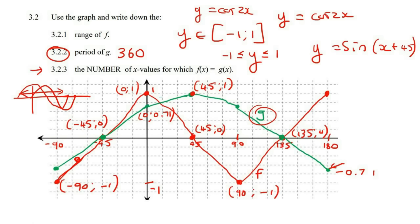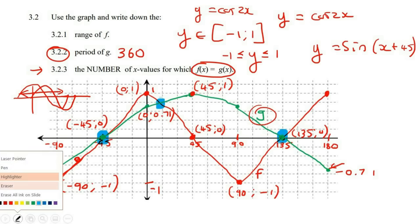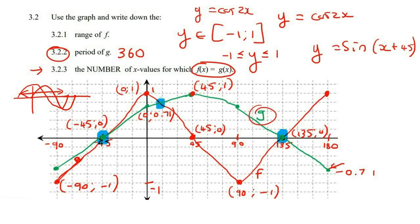The last sub-question asks for the number of x values where the two graphs are equal. The two graphs are equal wherever they cross over. They cross three times, so the answer is three.